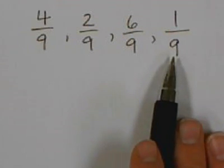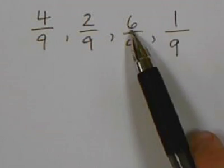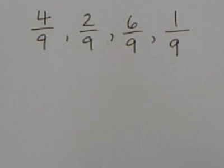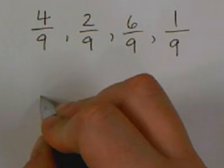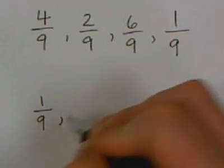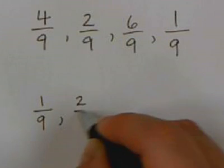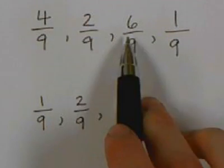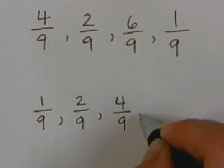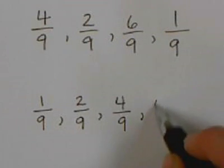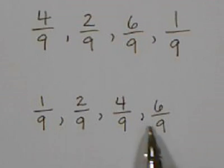So now it's really quite simple to put them in order from least to greatest. All I have to do is look at the numerators and find which one's the smallest. 1 is my smallest numerator, so that one would come first: 1 ninth. 2 is my next smallest, so 2 ninths. 4 is next, so 4 ninths. Then 6 ninths. And now these four fractions are in order from least to greatest.